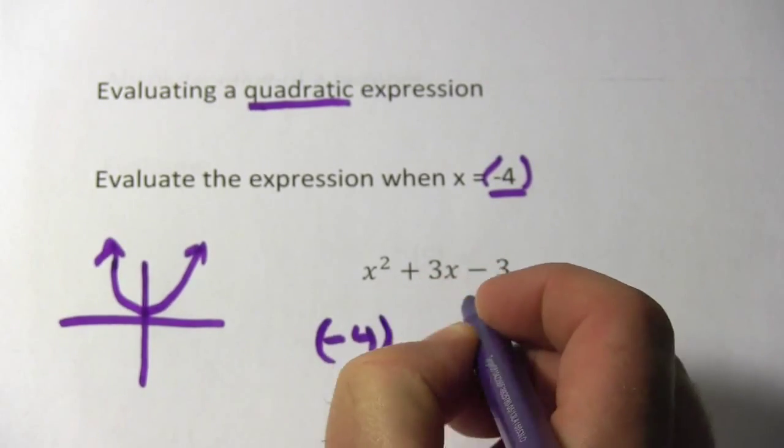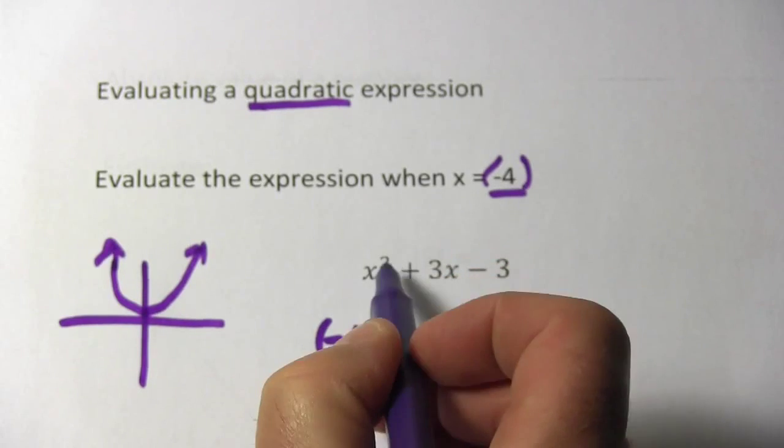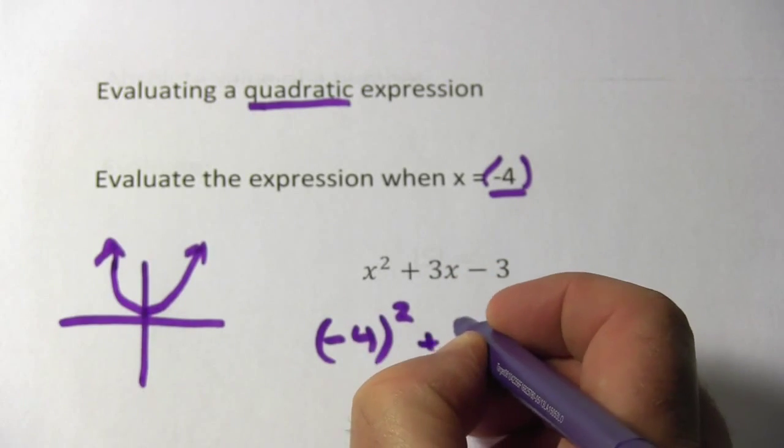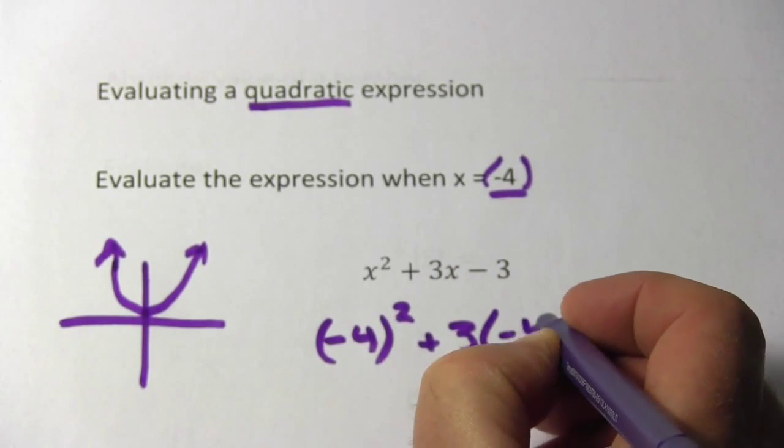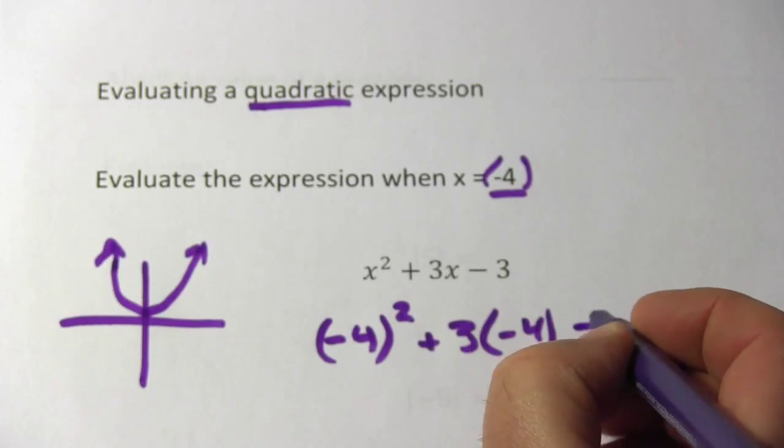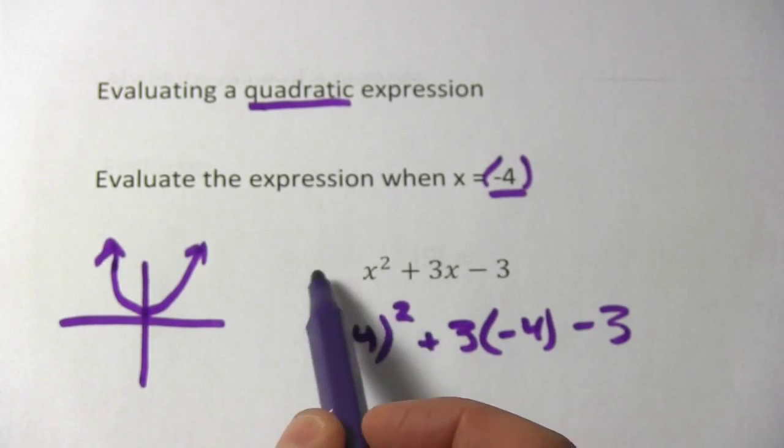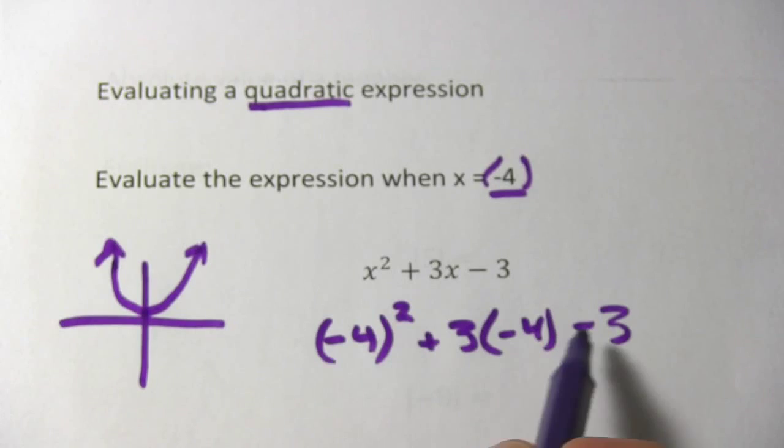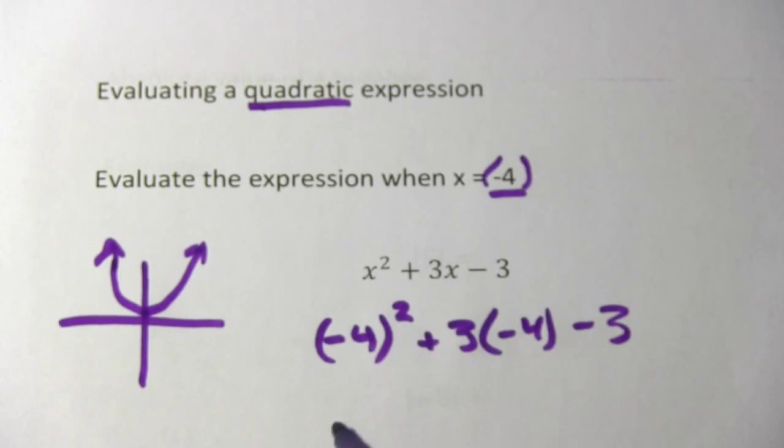I'm going to have parentheses to the second power, and then plus 3 times negative 4, and then our minus 3. So this is that same quadratic expression, just with negative 4 in place of x.